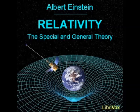Minkowski found that the Lorentz transformations satisfy the following simple conditions. Let us consider two neighboring events, the relative position of which, in the four-dimensional continuum, is given with respect to a Galilean reference body K by the space coordinate differences dx, dy, dz, and the time difference dt. With reference to a second Galilean system, we shall suppose that the corresponding differences for these two events are dx prime, dy prime, dz prime, dt prime.